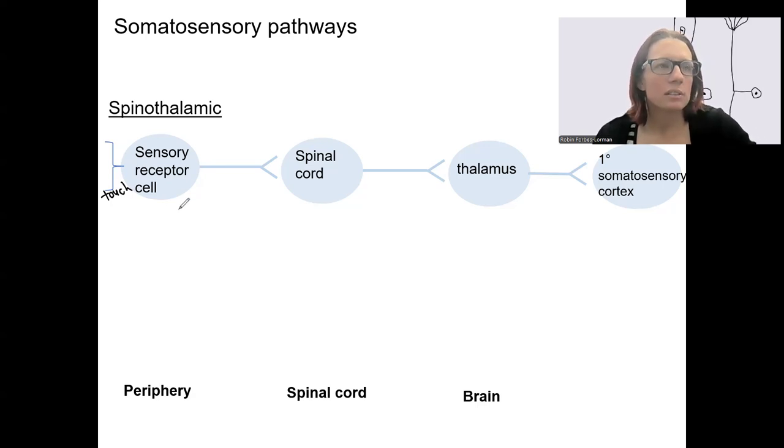This touch information is going to travel via this unipolar neuron to the spinal cord, exactly the dorsal horn, then to the thalamus, then to the primary sensory cortex. This is where perception happens.